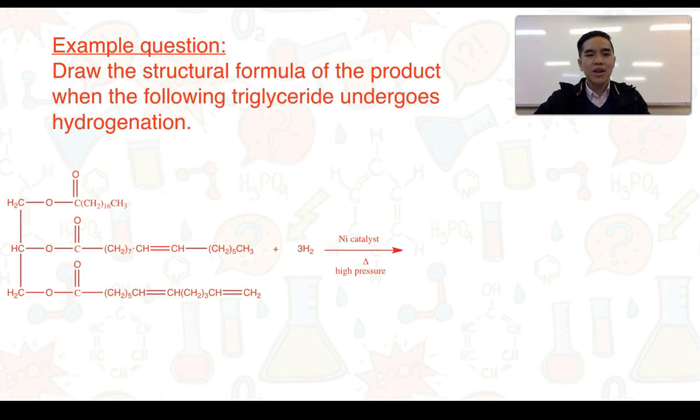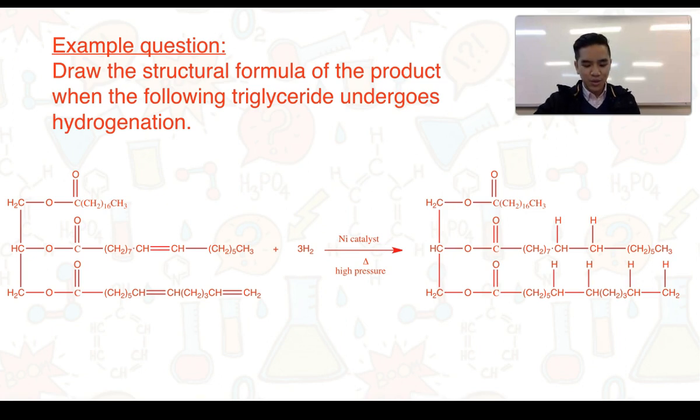We now have an example question. Draw the structural formula of the product when the following triglyceride undergoes hydrogenation. We can see in this start of the equation, we've got the presence of three carbon-to-carbon double bonds. We also have the presence of three moles of hydrogen, so we can expect that each of these carbon-to-carbon double bonds are going to undergo an addition reaction with hydrogen. And in doing so, we are going to convert this unsaturated triglyceride into this compound here, which is now saturated.